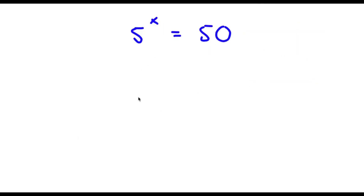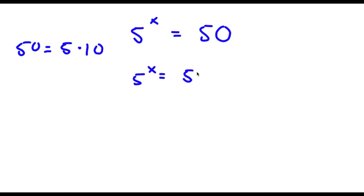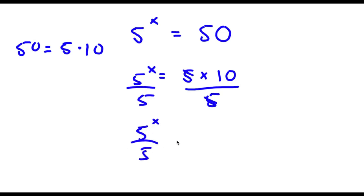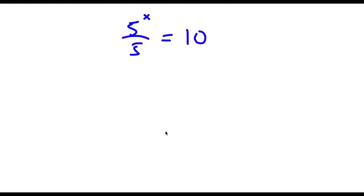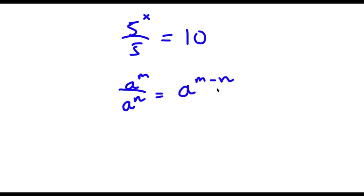For bonus problem 2, we have 5 to the power of x is equal to 50. Now 50 is the same thing as 5 times 10, so I have 5 to the power of x equal to 5 times 10. I'm going to divide both sides by 5, so these cancel out and I have 5 to the power of x over 5 equal to 10. Now 5 is the same as 5 to the power of 1, and using the rule a to the power of m over a to the power of n equals a to the power of m minus n, we get 5 to the power of x minus 1 equals 10.